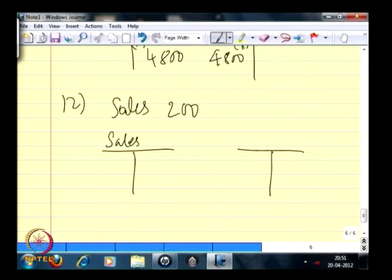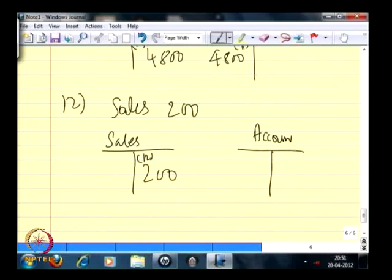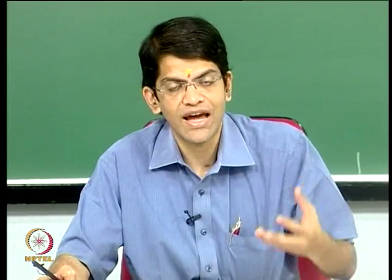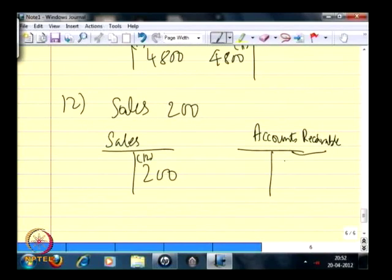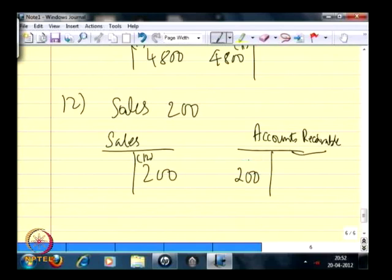Sales of ₹2,000: debit or credit? It is credit. Why? Because sales increases retained earnings, any increase in retained earnings increases owner's equity, and any increase in owner's equity is credit. Did I receive cash for this sale? No. So the corresponding debit is Accounts Receivable — a current asset account. I had no accounts receivable before; now because of this sale I will be getting ₹2,000 sometime in the future. Since accounts receivable is a current asset that increased from zero by 2,000, it is recorded on the left hand side (debit).